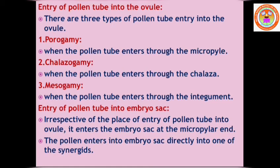The pollen tube enters the embryo sac directly into one of the synergids. The egg apparatus contains three cells: one female gamete, and one synergid on each lateral side of the female gamete. So there are two synergids at the lateral sides of the egg, and the pollen tube enters the embryo sac through one of them.